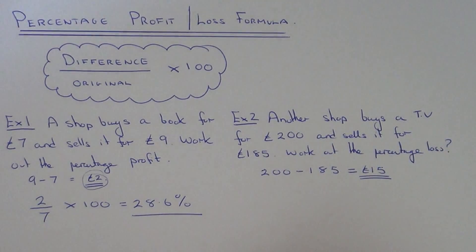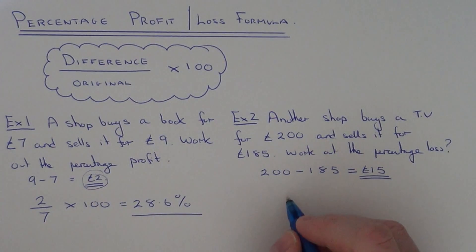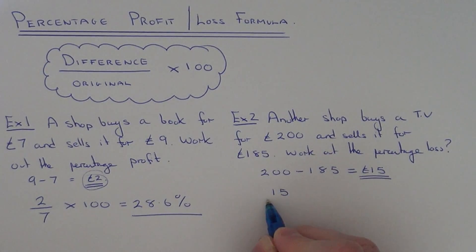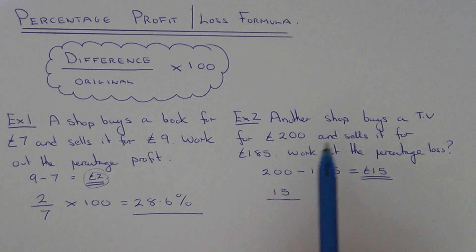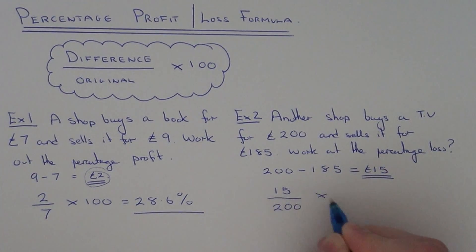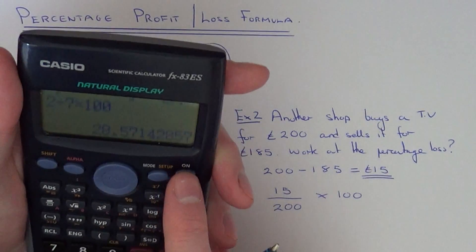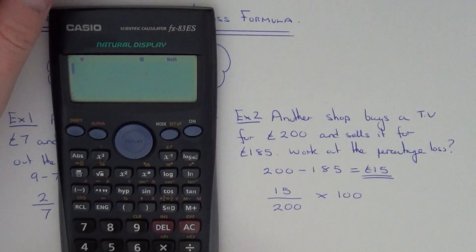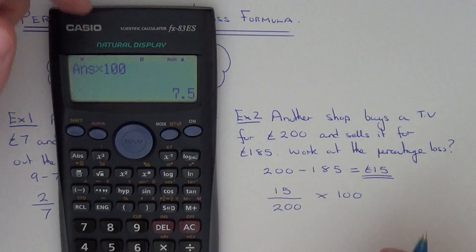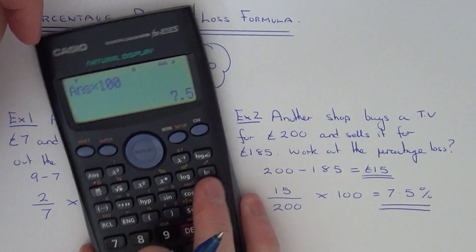So that is the loss on the sale of the TV. Let's put these numbers into our formula. Our difference is £15 — divide that by the original price, which is £200 the shop bought the item for. If we times that answer by 100, that will give us the percentage loss. So just use your calculator: £15 divided by 200 times 100, and that's 7.5%. So that is your percentage loss.